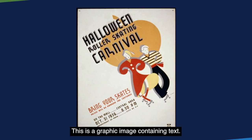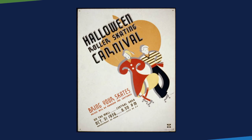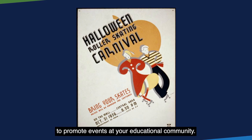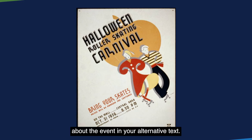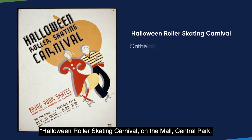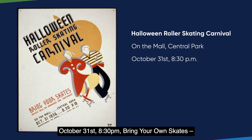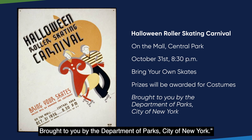Let's look at another example. This is a graphic image containing text — a promotional poster for a Halloween roller skating carnival. Your school may use an image like this to promote events at your educational community. You'll notice that all of the event details are on the image, so you have two options. Option 1: include all of the important descriptive information about the event in your alternative text. So our alternative text might read: Halloween Rollerskating Carnival on the Mall, Central Park, October 31st, 8:30pm. Bring your own skates. Prizes will be awarded for costumes. Brought to you by the Department of Parks, City of New York.